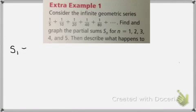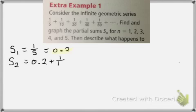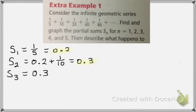So we're going to first find the sum of the first term, which is just 0.2 in fraction form. Now, let's find the sum of the first two terms. So I'm going to take my sum from the first one and then add the next term, which is one-tenth. And I get 0.3. Let's find the sum of the first three terms. So I can take my previous sum and just add my third term. And I get 0.35.